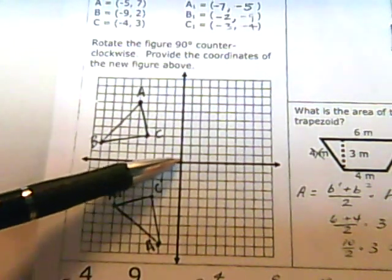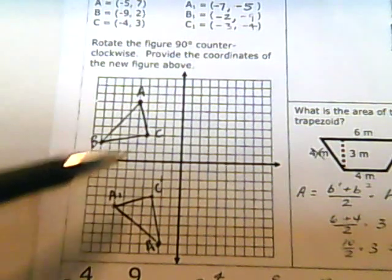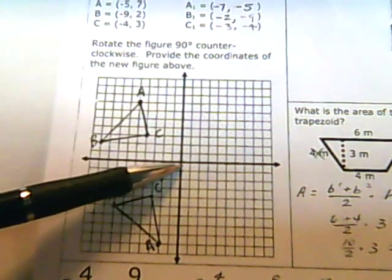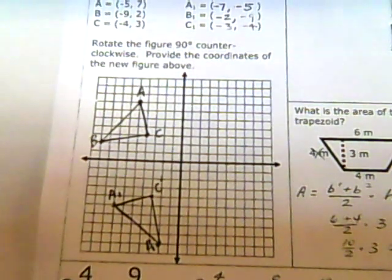And then graphed them. So negative 7, negative 5 would mean come over 7 this way and then down 5. Point B would be to the left 2, down 9, and so on and so forth.